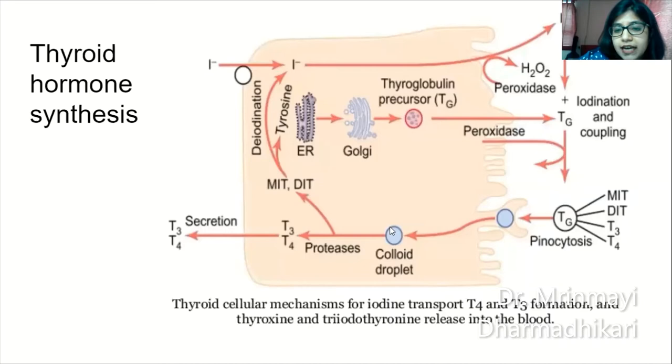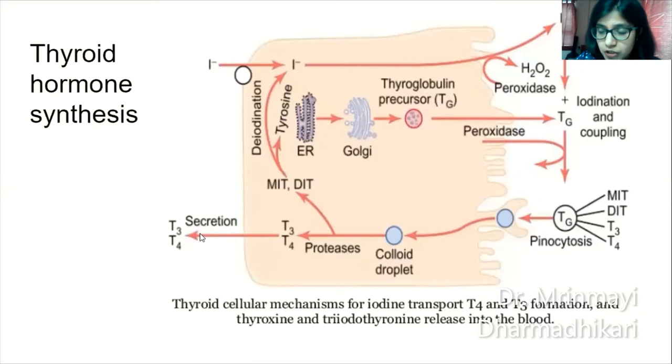Colloid droplets undergo proteolysis and hydrolysis, and ultimately there is release of T3 and T4 hormones into the bloodstream.